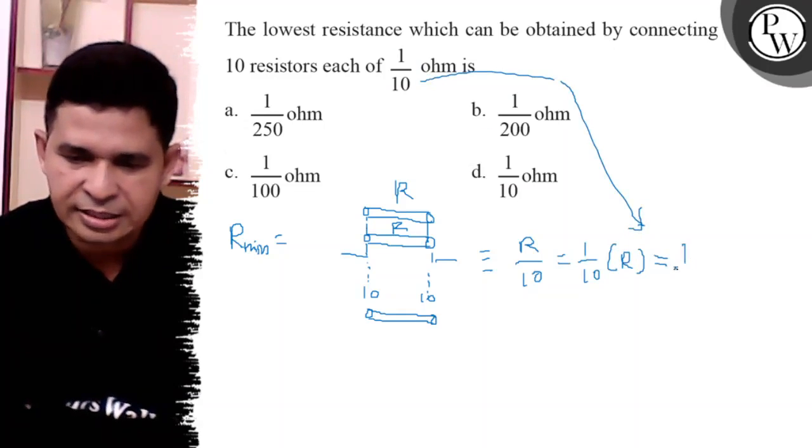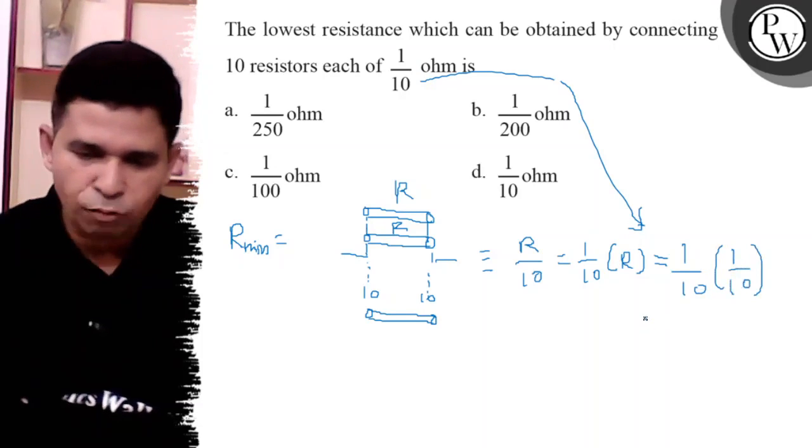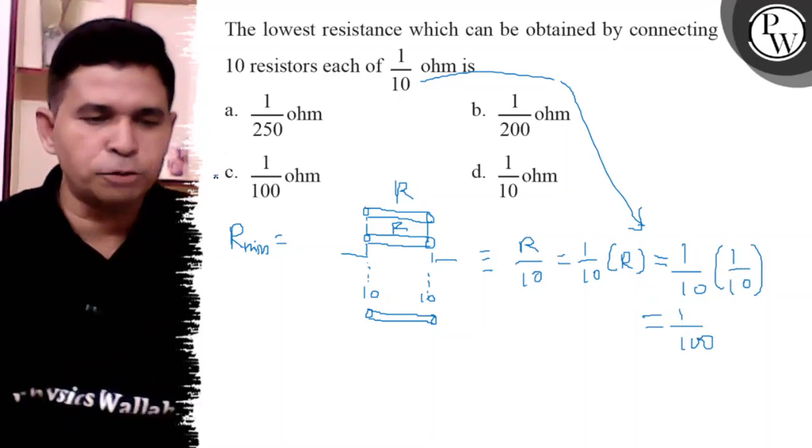Final answer is 1 by 10, or R ka value is 1 by 10. So it is 1 by 100. So final answer is 1 by 100. That is the option C.